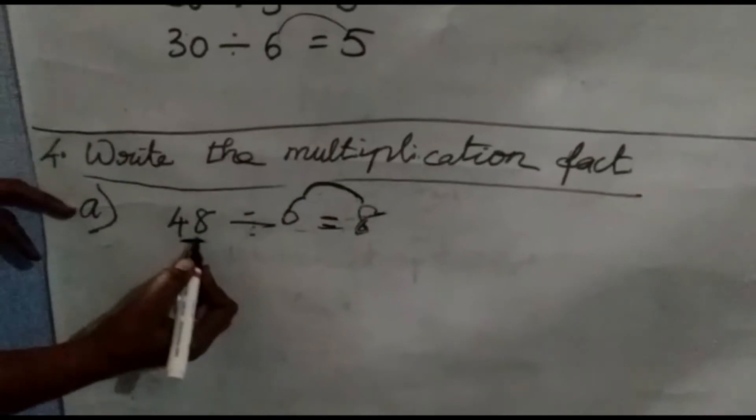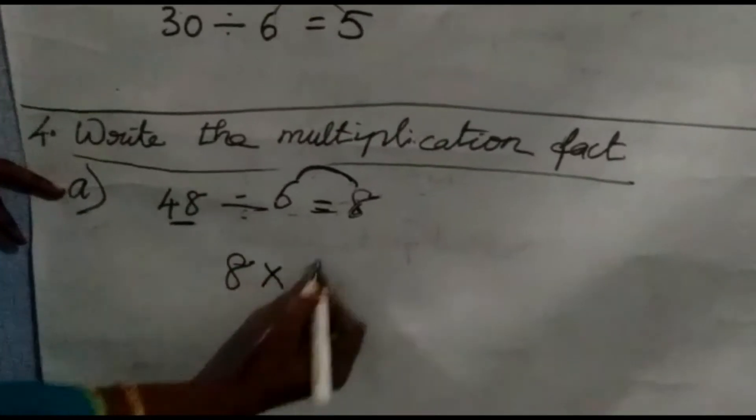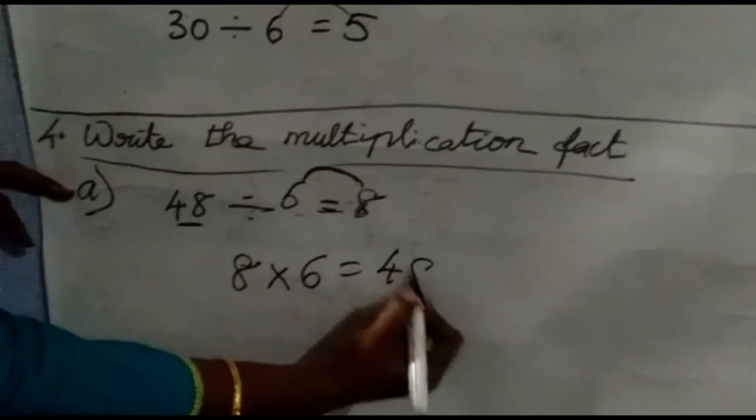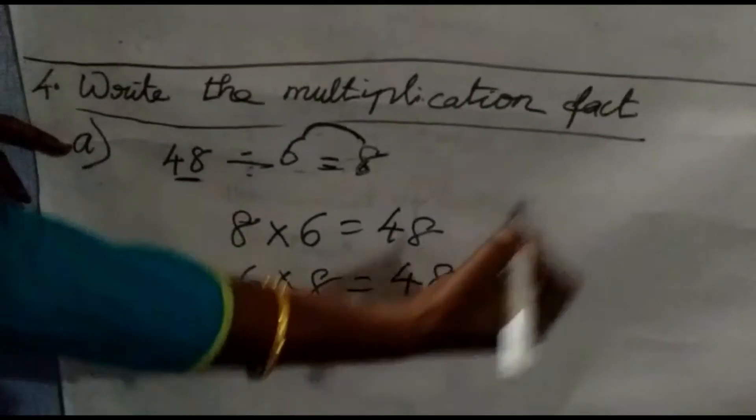See, 8 times 6 are 48. Again, change the number. 6 times 8 are 48. Okay, children.